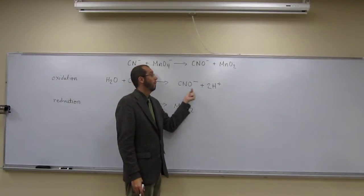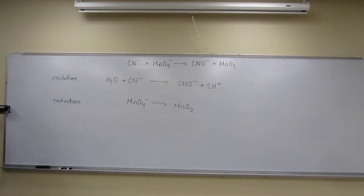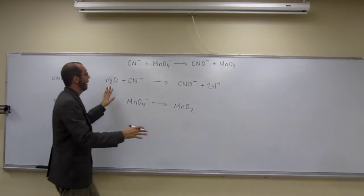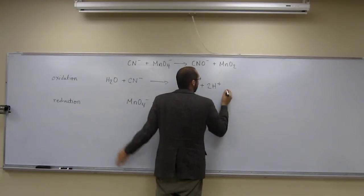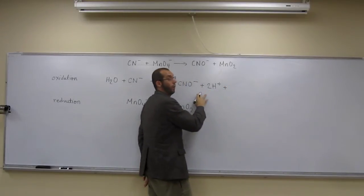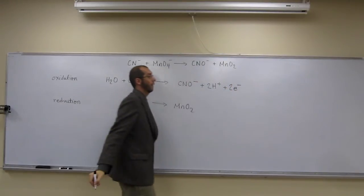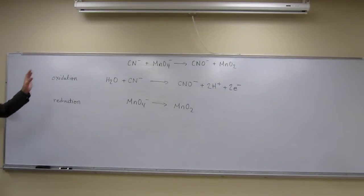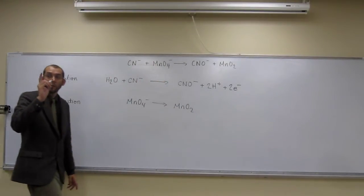The only way that we can change the charge is to add electrons. Electrons are negatively charged. Which side are we going to add them to — left or right? The right, because we want to get to negative one. From one to negative one, how many electrons do we have to add? Two. So that oxidation half-reaction is balanced, and you can see now that we're losing electrons — definitely oxidation.